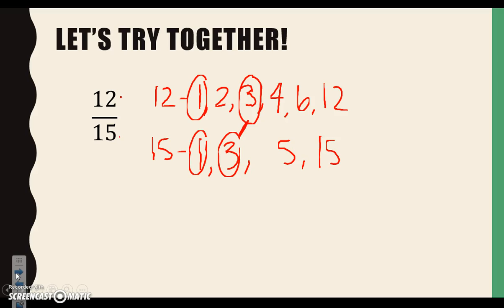Let's start with 12. 12 divided by 3 is a math fact that hopefully we can recall, which is 4. If we can't, we can always think about it in terms of multiplication: 3 times what gives me 12? Let's move down to 15. 15 divided by 3 — some of us will be able to recall that math fact, which is 5. If we can't, remember you can always ask yourself in terms of multiplication: 3 times what gives me 15, which is 5.